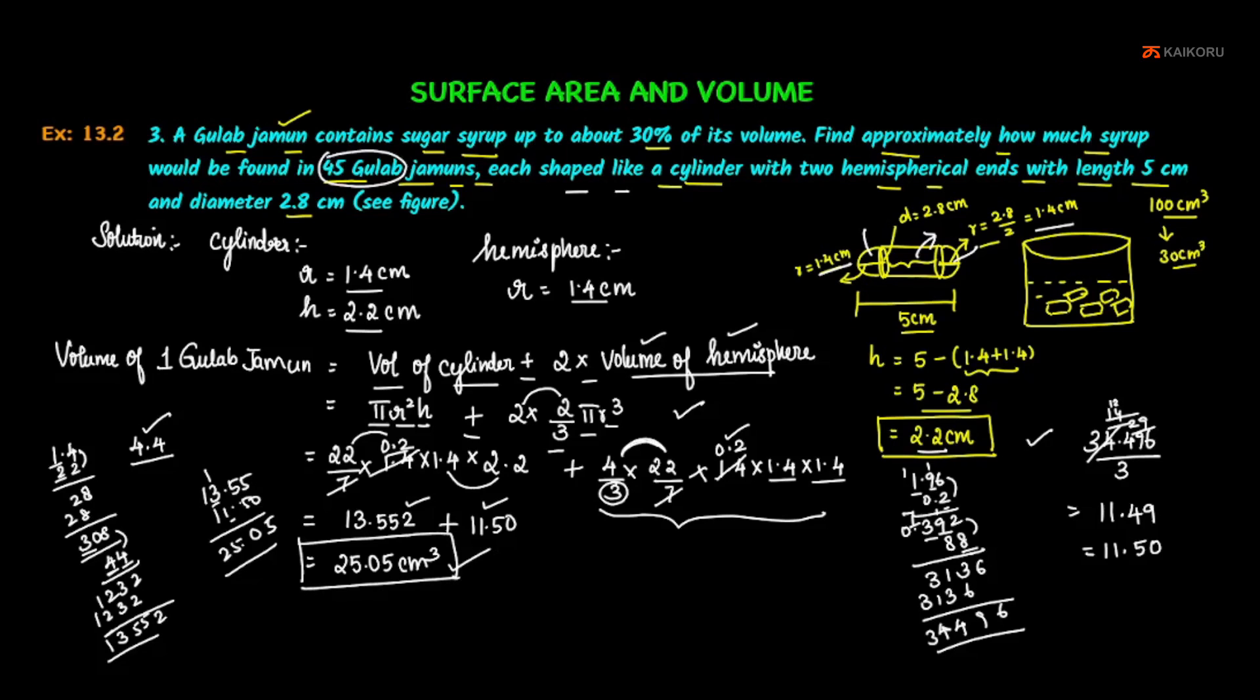Volume of 45 gulab jamuns equals 45 into 25.05 centimeter cube. 45 gulab jamuns equals 45 times 25.05 centimeter cube.